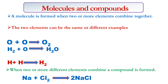The two elements can also be different. For instance, when you combine two hydrogen atoms plus one oxygen atom, you will form a water molecule. Also, when you combine two hydrogen atoms, you will form a hydrogen molecule. So a molecule can be formed from two elements that are the same or from two elements that are different.